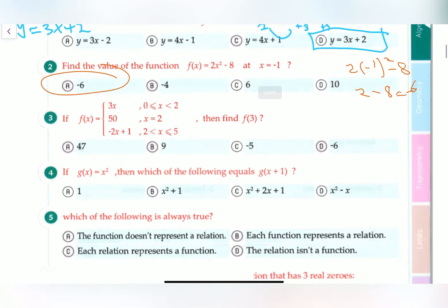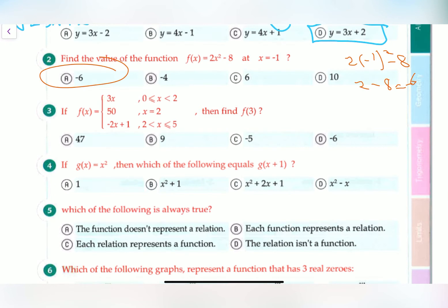Number three asks you to find f(3) using a piecewise function. Since 3 is not less than or equal to 0, and not less than 2, and not equal to 2, we check the last piece: x greater than 2 and less than or equal to 5. Yes, 3 satisfies this. So we plug in: negative 2 times 3 plus 1 equals negative 6 plus 1, which is negative 5. Our answer is C.